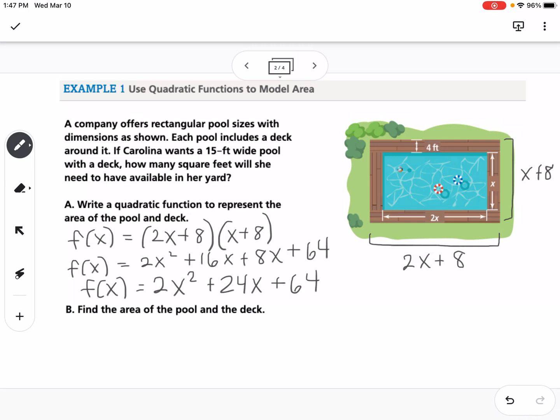And then it says to find the area. So it tells us in the problem that 15 feet wide, so that tells us that x is 15, so we want to find f of 15, which means everywhere there's an x, we're going to plug in 15.